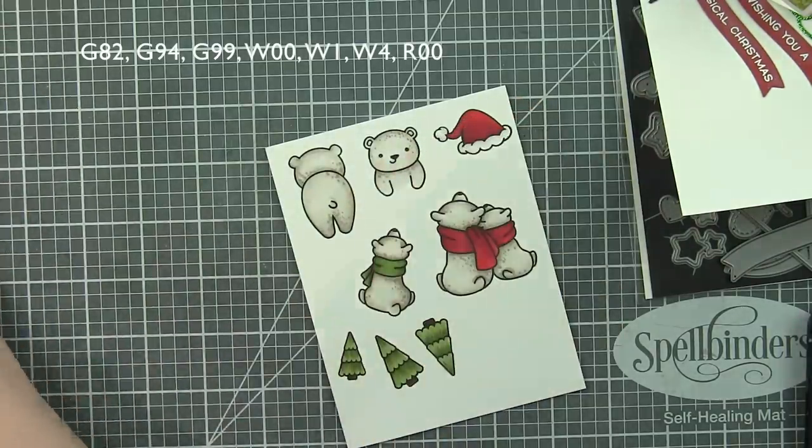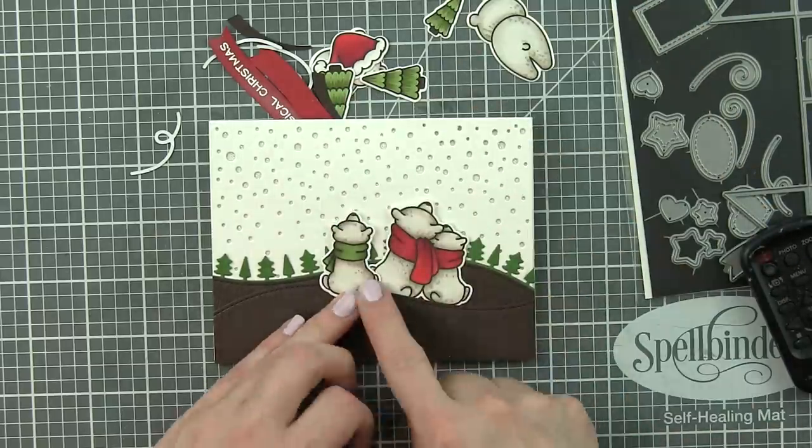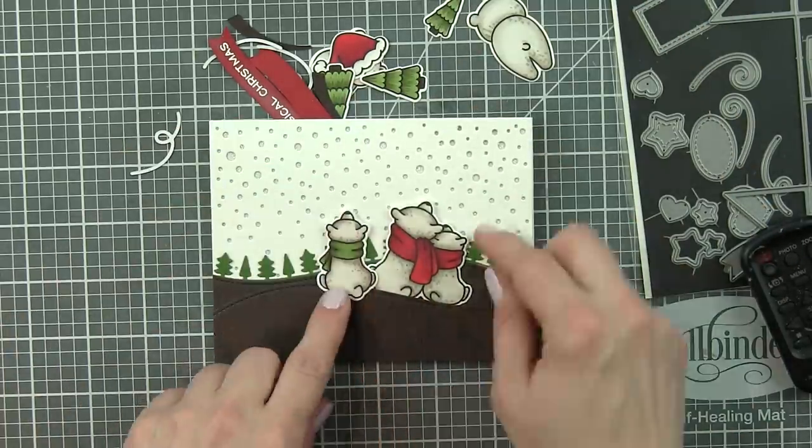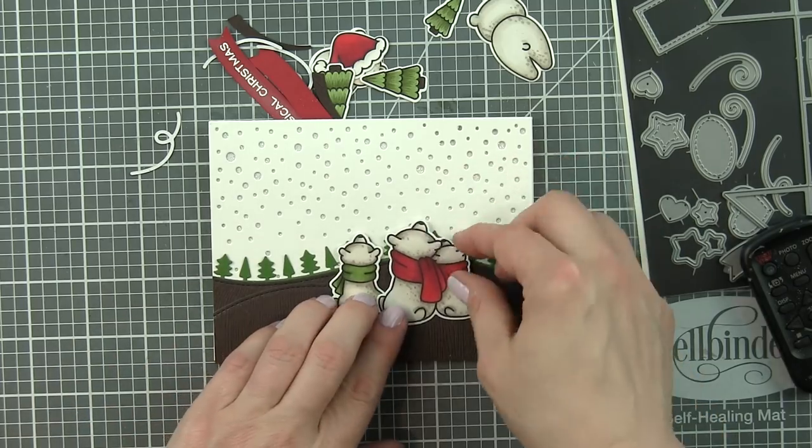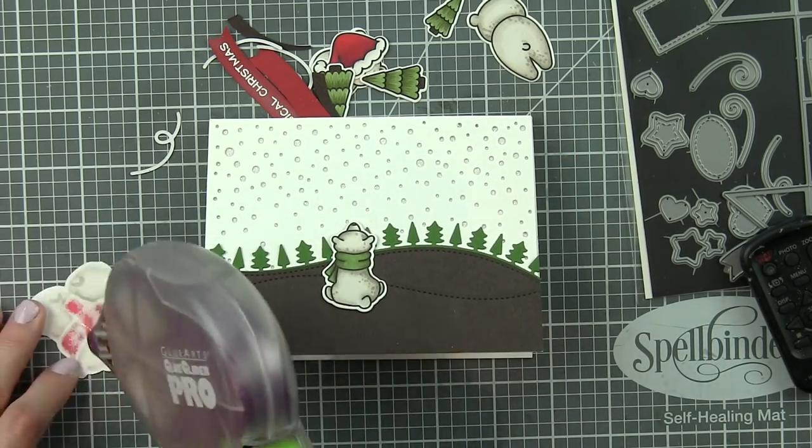And then we're going to die cut everything with the coordinating dies. And I'm using the coordinating Winter Skies dies, the coordinating For You Deer dies, and the coordinating Hats Off To You dies.